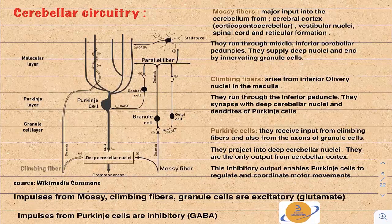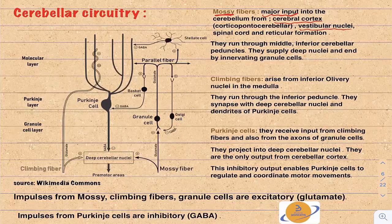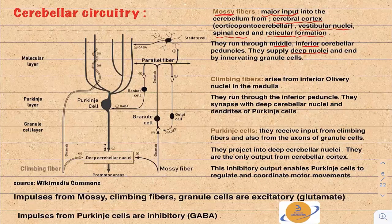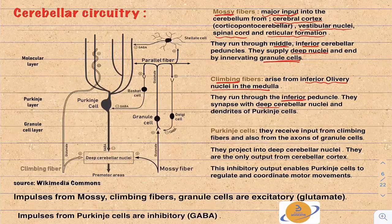There are two types of afferent fibers entering the cerebellum. The first is mossy fibers — the major input. These come from the cerebral cortex via the corticopontocerebellar tract, the vestibular nuclei, spinal cord, and reticular formation. They run through the middle and inferior cerebellar peduncles, supply the deep cerebellar nuclei, and end by synapsing with the granule cells. The second type, climbing fibers, arise from the inferior olivary nuclei in the medulla, run through the inferior cerebellar peduncle, and synapse with the deep cerebellar nuclei.